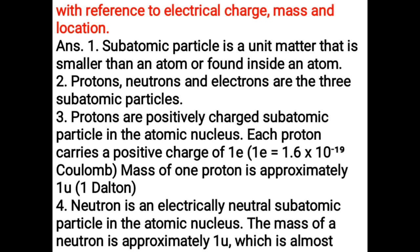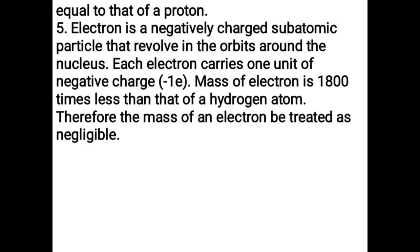A neutron is an electrically neutral subatomic particle in the atomic nucleus. The mass of a neutron is approximately 1u, which is almost equal to that of a proton. An electron is a negatively charged subatomic particle that revolves in orbits around the nucleus. Each electron carries 1 unit of negative charge (−1). The mass of an electron is 1800 times less than that of a hydrogen atom and is therefore treated as negligible.